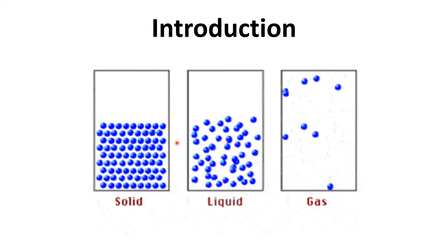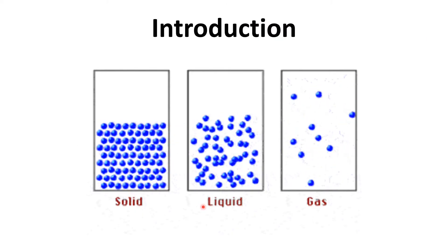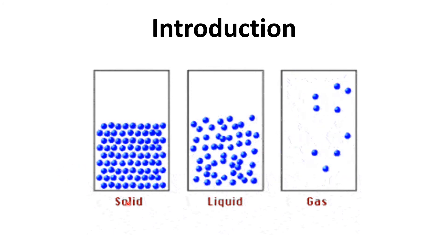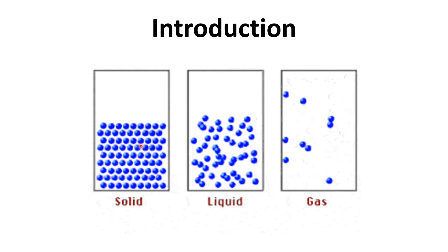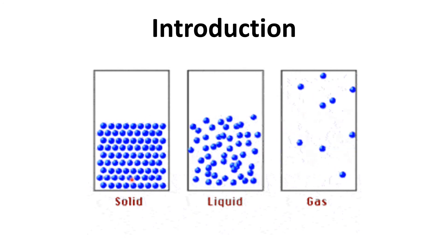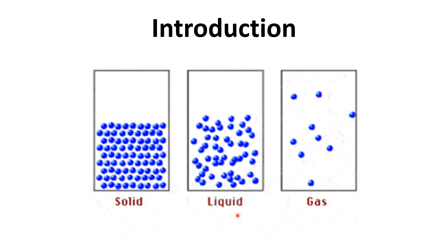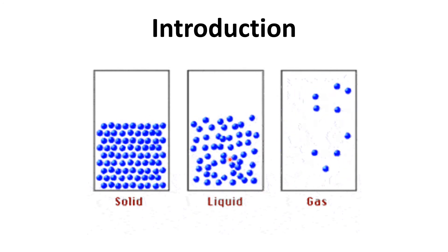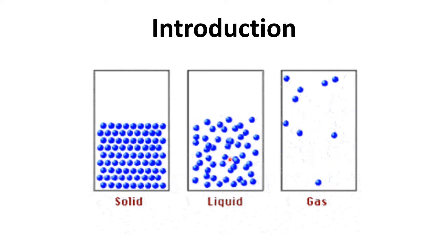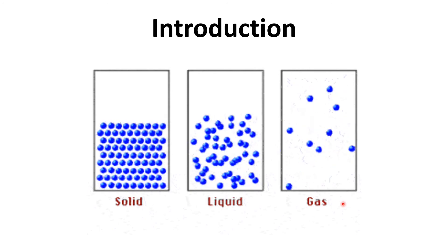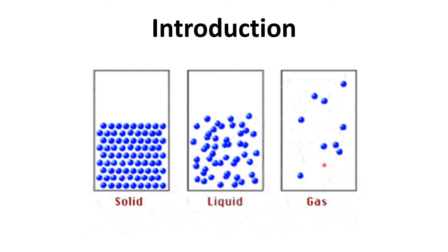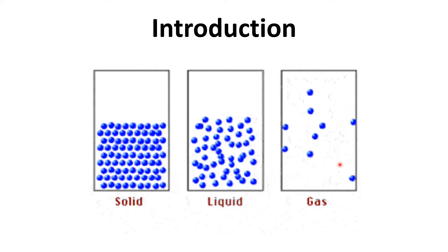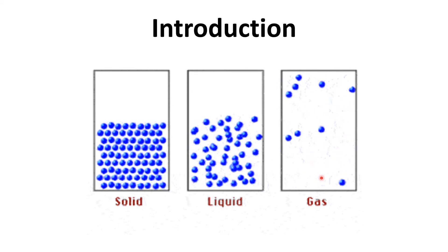The main difference between solids, liquids and gases is that in solids the particles are tightly packed — so close to each other that they cannot move. In liquids, the particles are a little bit loosely packed but they are not loose enough to move freely all over. In gases, the distance between the particles is very large and they can move freely in the container.